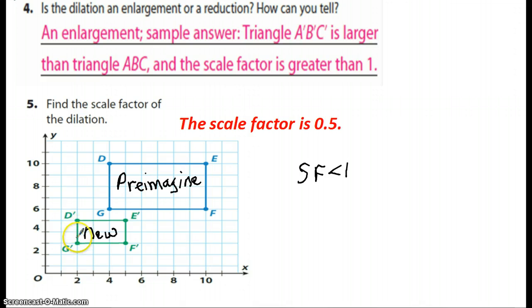But let's just take a look at a side here. If I went from D to G, I see one, two, three, four. And if I went from D prime to G prime, I see one, two.